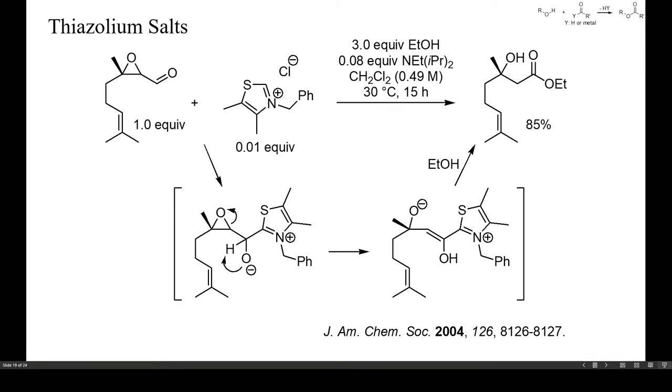Instead of alkenes, also epoxides may act as intramolecular oxidants, as in this example. Just 1% of a thiazolium salt was enough to achieve a high yield of hydroxyester in 15 hours at 30 degrees Celsius.